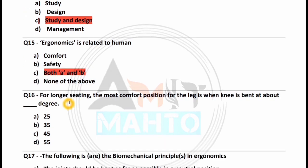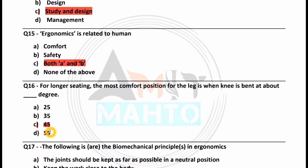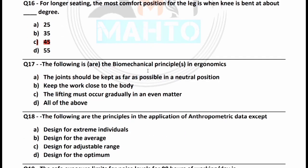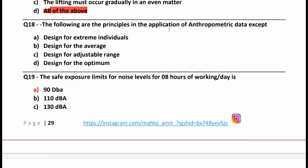For longer seating, the most comfortable position for the legs is when the knee is bent at about 45 degrees — option C is correct. The following are biomechanical principles in ergonomics: joints should be kept in a neutral position, keep the work close to the body, lifting must occur gradually and evenly. All of the above is the right answer, option D.